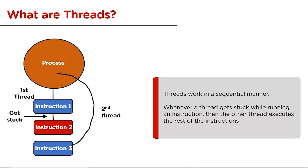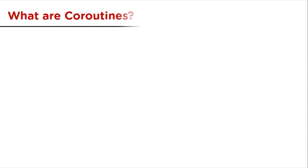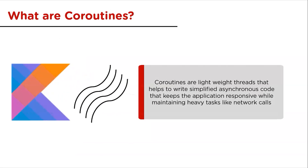Now that we've understood threads, let's learn about coroutines. Coroutines stands for cooperating functions — 'co' stands for cooperation and 'routine' stands for functions. Coroutines can do everything a thread can, but are also very efficient. Coroutines are lightweight threads that help write simplified asynchronous code that keeps the application responsive while maintaining heavy tasks like network calls.